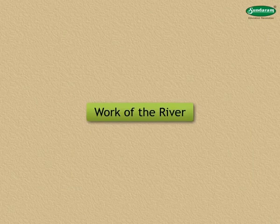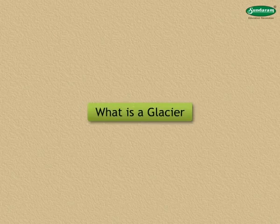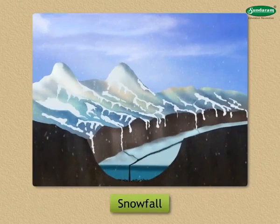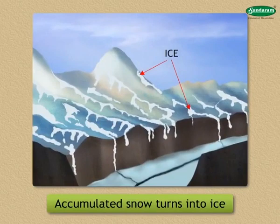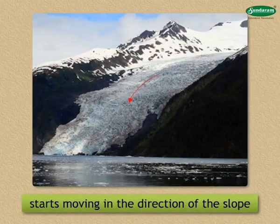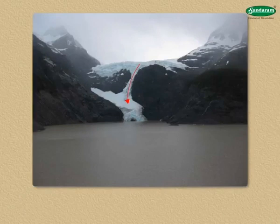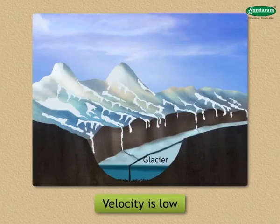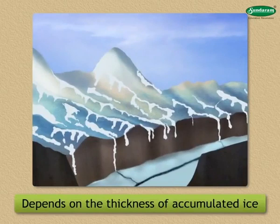After learning about the work of the river, we will now get into the details of the work of the glacier. A glacier is formed in high altitude areas where precipitation is in the form of snowfall. Over a period of time, the accumulated snow turns into ice. As a result of pressure, the accumulated ice starts moving in the direction of the slope. Such a flow of ice moving in the direction of slope is called a glacier. Its velocity is very low since the ice is in solid state.